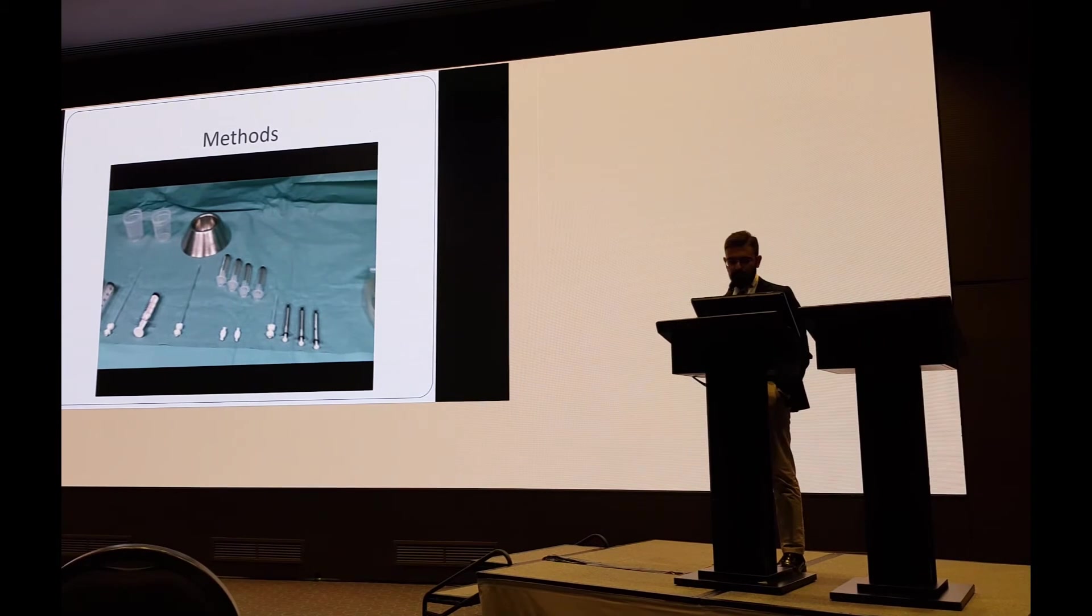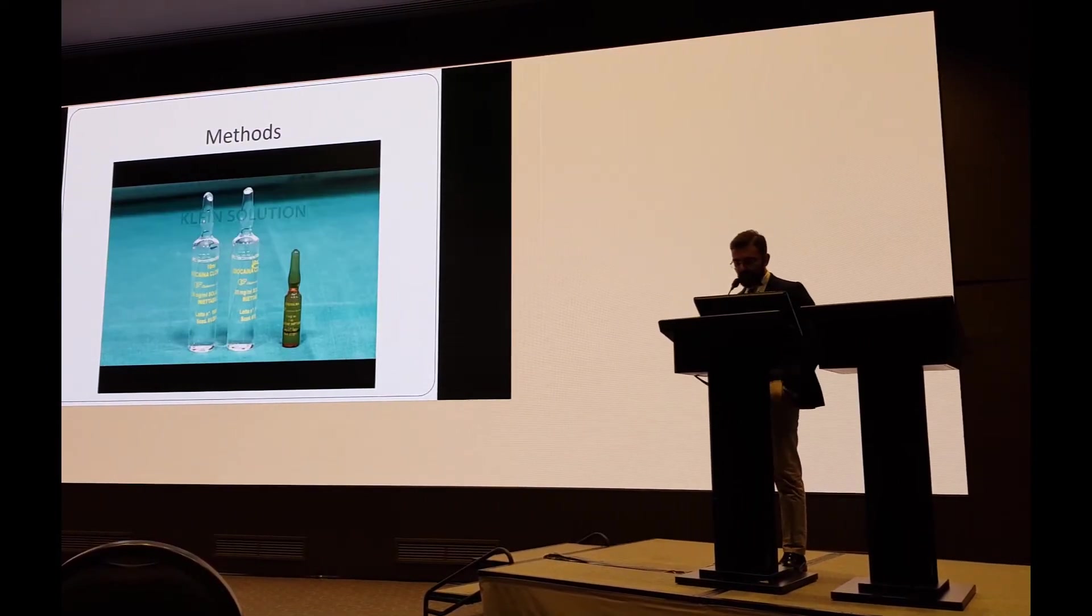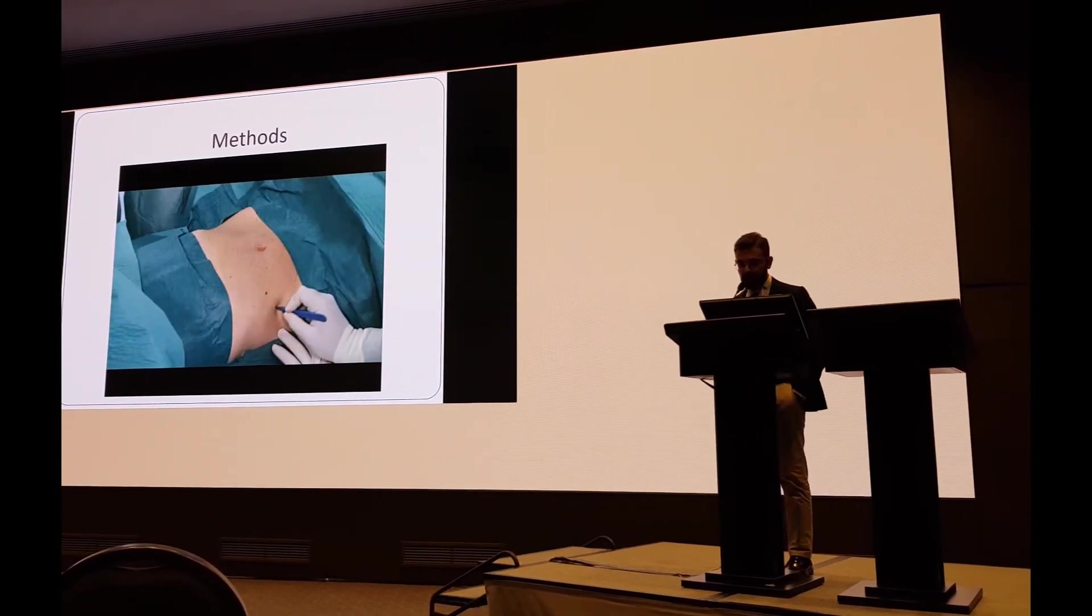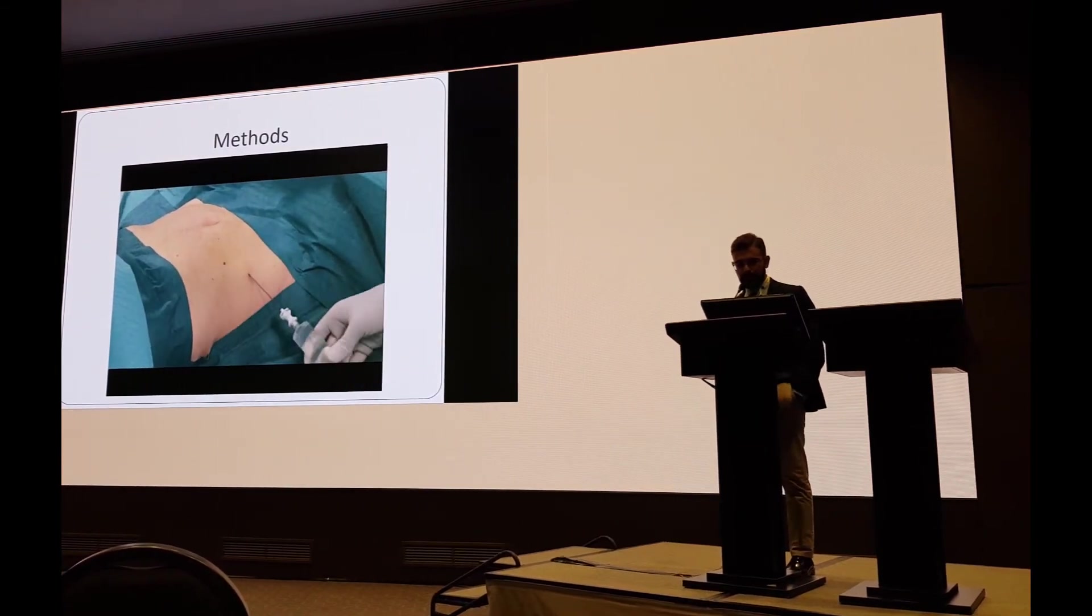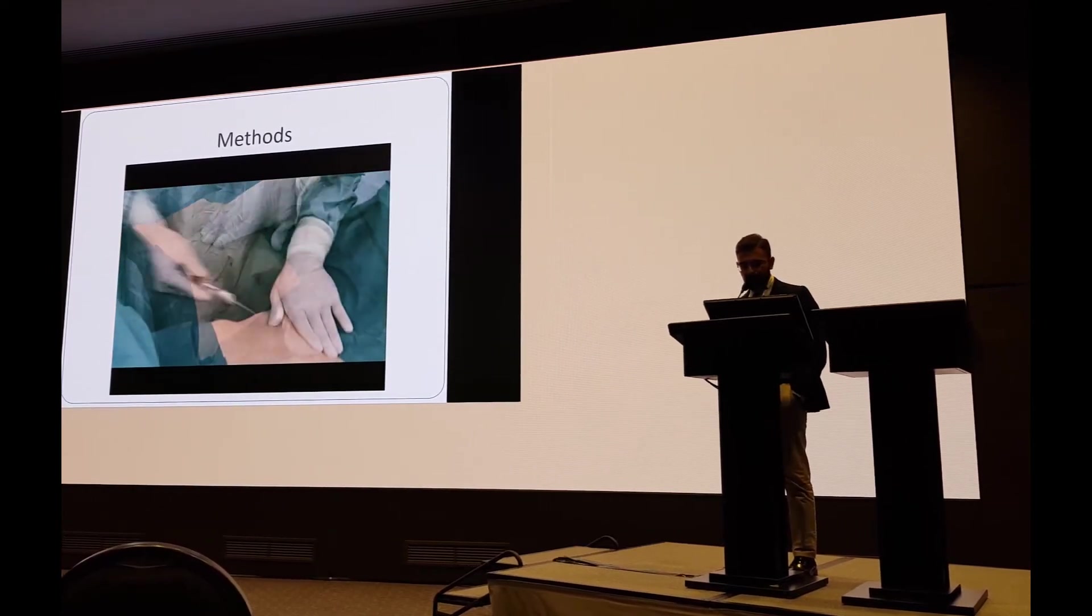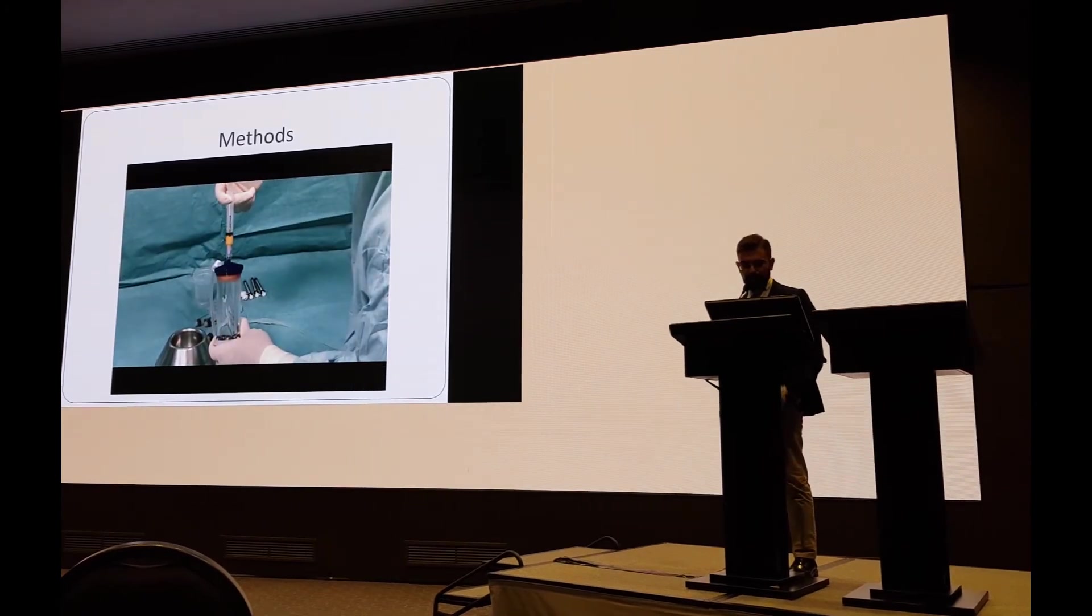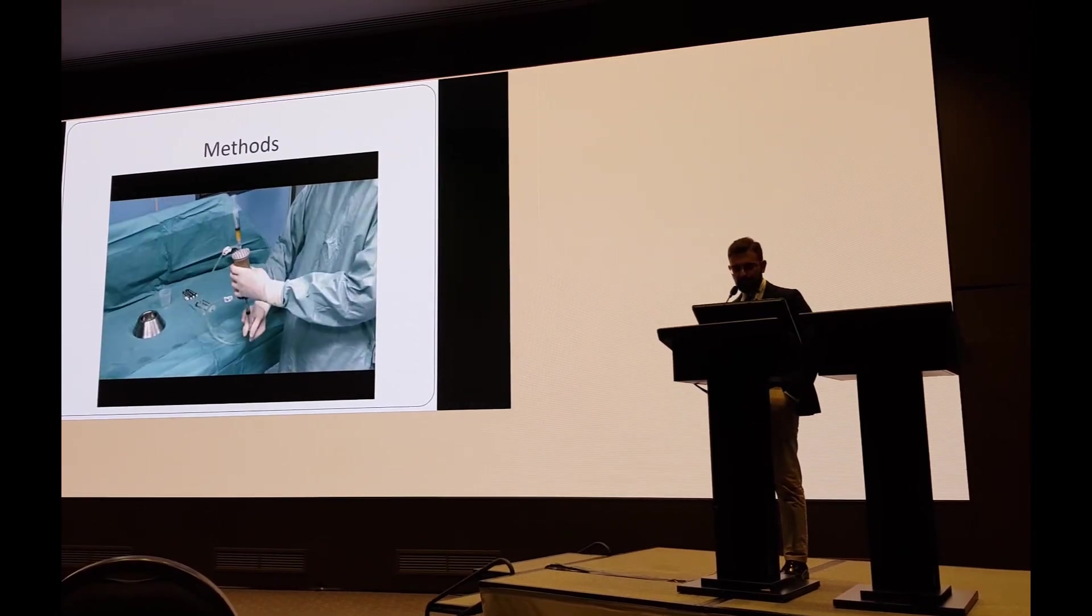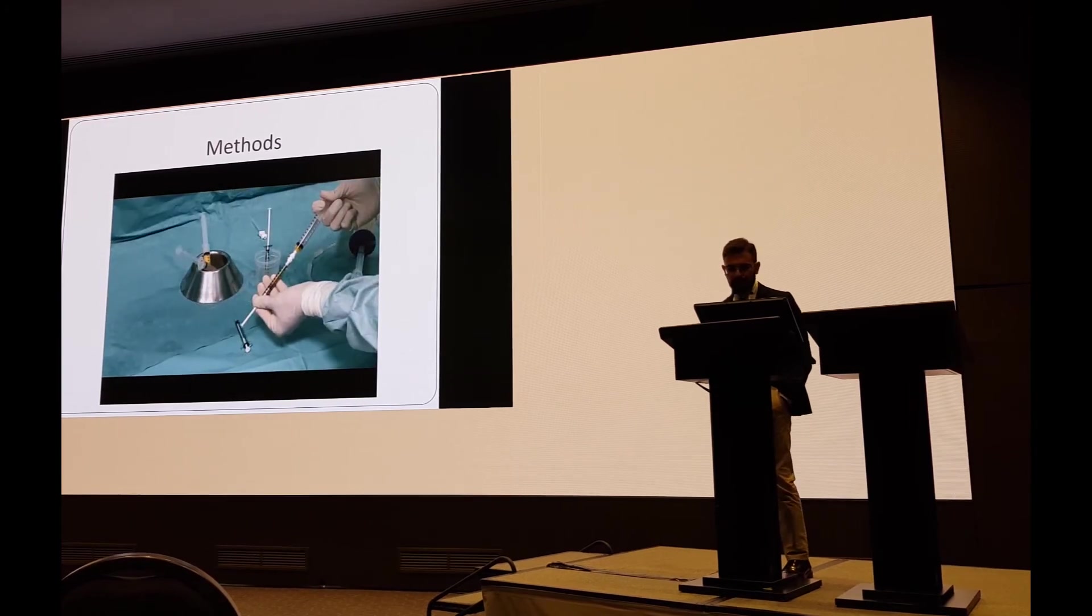It is a short video. This is the kit that we used. This is the Klein solution that we used to infiltrate the subcutaneous adipose tissue of the anterior abdominal wall. Here is the infiltration. We wait 15 minutes, and then we harvest with this specialized syringe. Then the adipose tissue is put inside this device, and after some steps we obtain the final product that we transfer inside one cc syringes.